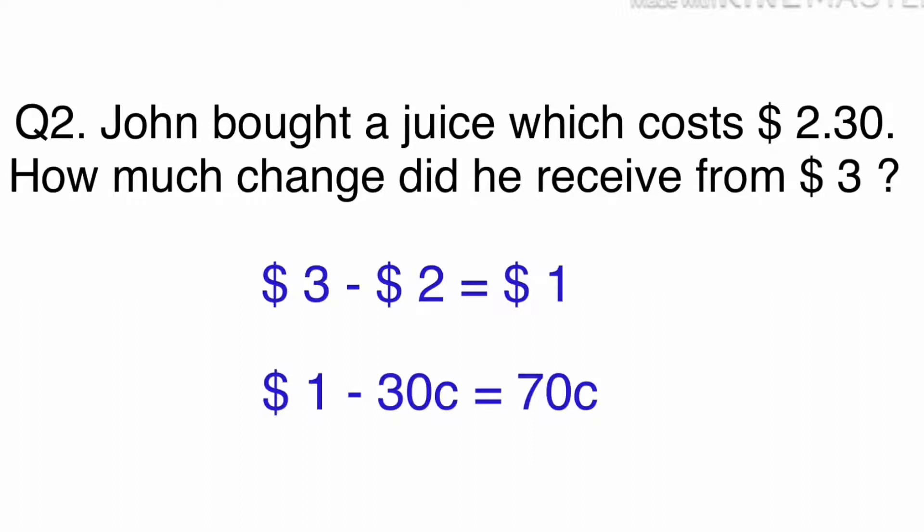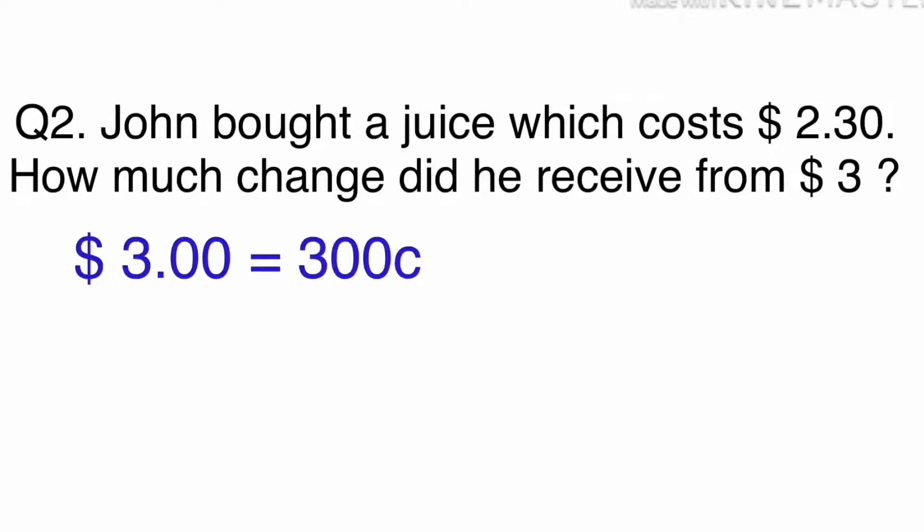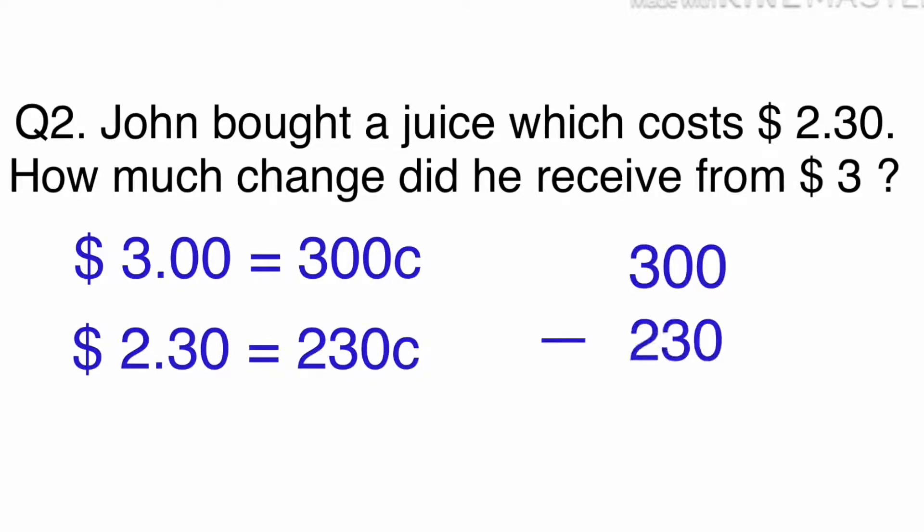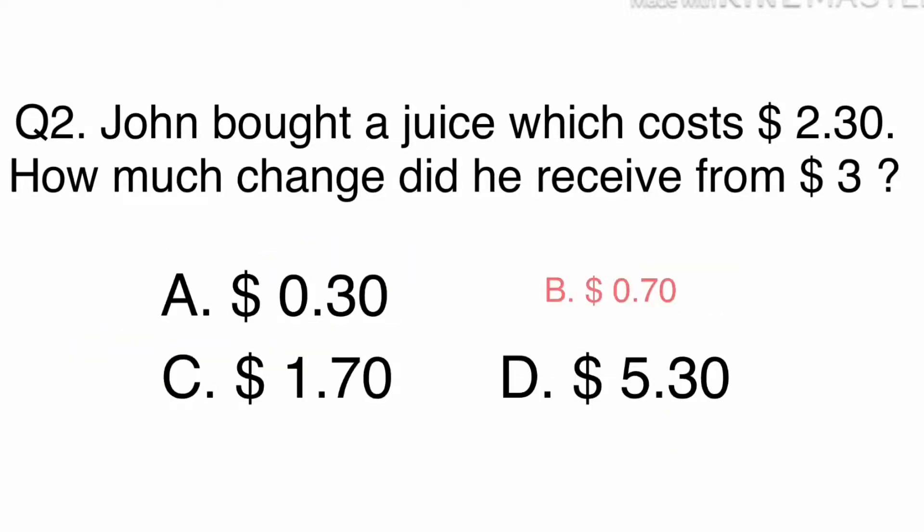Then, take $0.30 away from $1.00 to get $0.70. Another method to solve this question is $3.00 equals 300 cents and $2.30 equals 230 cents. Simply subtract 230 from 300 to get 70 cents. The answer is B, 70 cents.